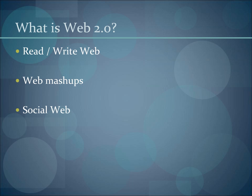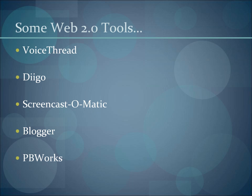And don't worry if the terms blogs, wikis, VoiceThread, YouTube, or Twitter made you wonder — I promise you'll be more than comfortable with those terms by the time you complete this workshop. There are hundreds of Web 2.0 tools or services available, and we couldn't possibly cover them all in a year, let alone ten days. But I have selected five — VoiceThread, Dego, Screencast-O-Matic, Blogger, and PBWorks — that provide multiple uses for teaching and learning in your courses. These five each represent a certain class of tools and give you a good idea of the wide variety of options available to you.